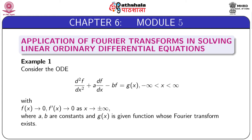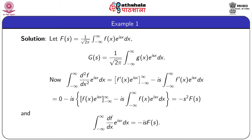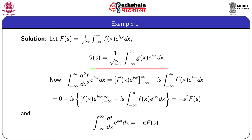We shall apply Fourier transform to solve this linear ODE. Let capital F(s) denote the Fourier transform of f(x), given by (1/√2π) integral from -∞ to +∞ dx, and capital G(s) is the Fourier transform of g(x), given by (1/√2π) integral from -∞ to +∞ dx.